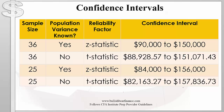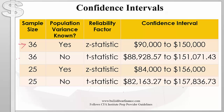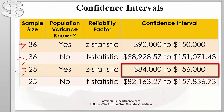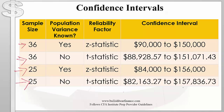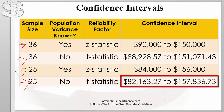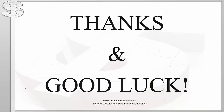If you do the math, row 1 has the narrowest confidence interval. Compared to row 2, both have the same sample size but row 1 has a smaller reliability factor based on the z statistic. Row 3 is wider than row 2 because row 3 is a small sample. Finally, row 4 is the widest confidence interval of them all — wider than row 3 because row 4 is based on the t statistic. This brings us to the end of this presentation.